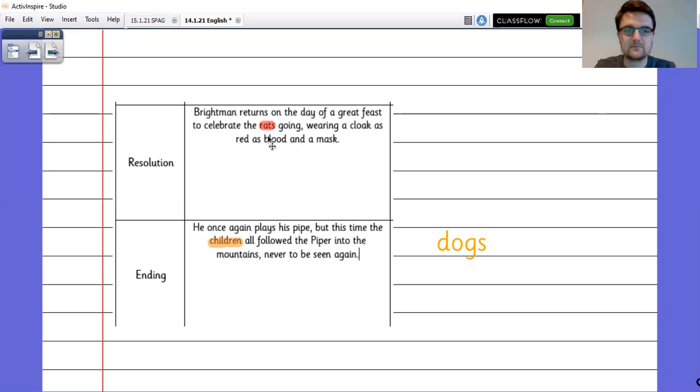I thought instead of, so we know that we've changed the rats into cockroaches for the story and to try to make sure that we've got something else changed. Instead of the children following the piper at the end, I thought we could change it to say that all of the dogs from the town follow him. So the town is left without their pets. So we've tried to make a couple of changes to it because this is our innovation stage.